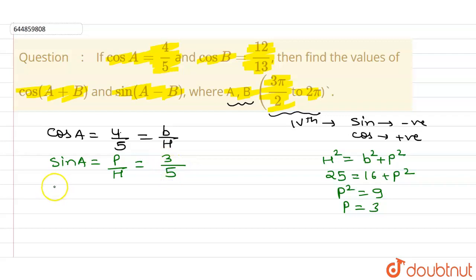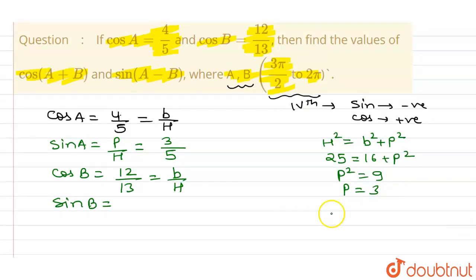Similarly, cos B equals 12/13, which equals B/H. So I can write here sin B equals, so for this angle B, I can write H² equals B² plus P².